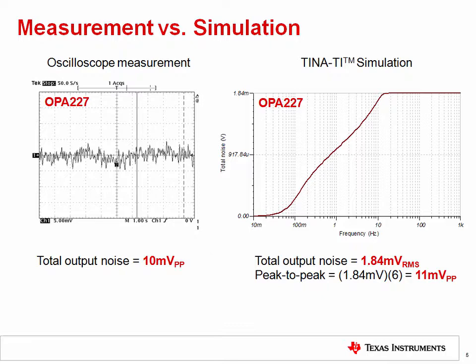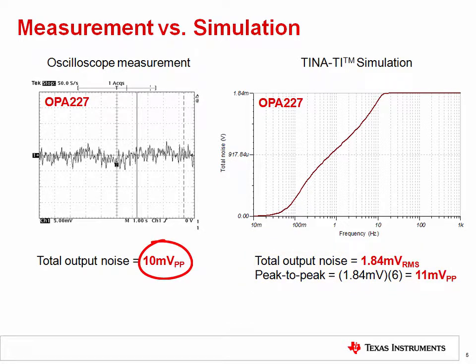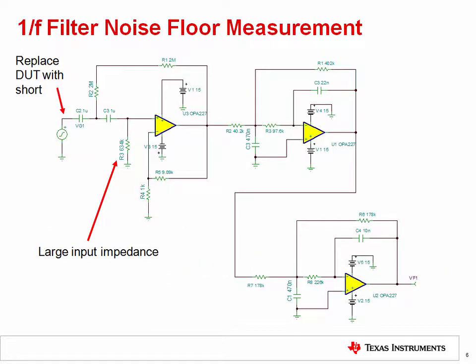The TINA noise analysis gives a total noise of 1.84 millivolts RMS. Converting to peak-to-peak noise using the 6× RMS relationship, the results are quite close: 10 mV peak-to-peak from measurement and 11 mV peak-to-peak from simulation. To be confident that a noise measurement is accurate, it is always important to look at the test circuit's noise floor by replacing the device under test with a short circuit. Note that the type of op amp used in the filter can affect the noise floor, since some amplifiers are optimized for low noise performance.